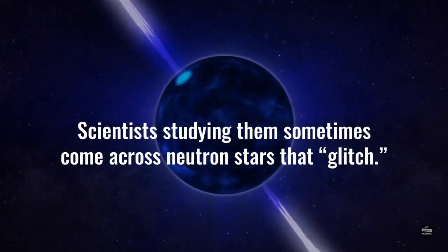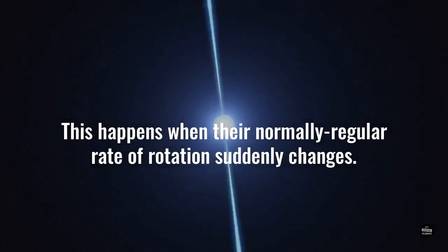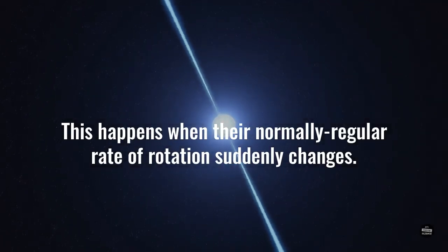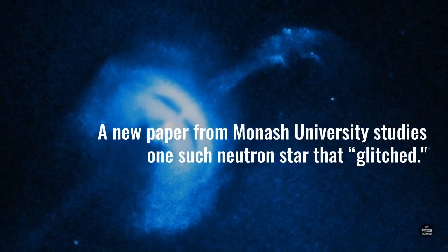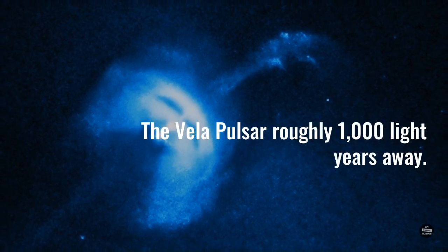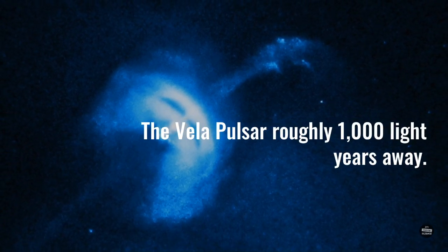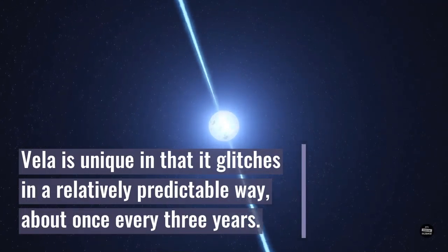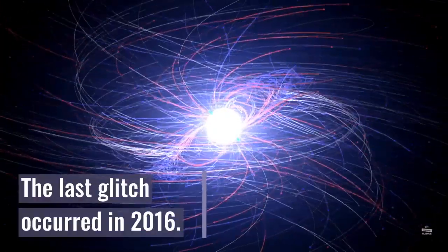Scientists studying them sometimes come across neutron stars that glitch. This happens when their normally regular rate of rotation suddenly changes. A new paper from Menashe University studies one such neutron star that glitched, the Vila pulsar, roughly 1,000 light years away. Vila is unique in that it glitches in a relatively unpredictable way, about once every three years. The last glitch occurred in 2016.